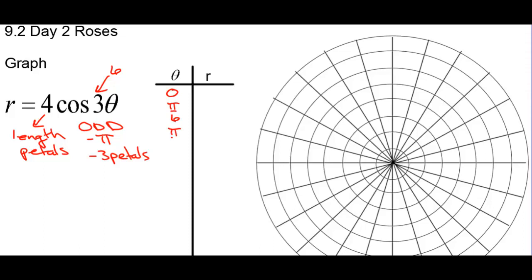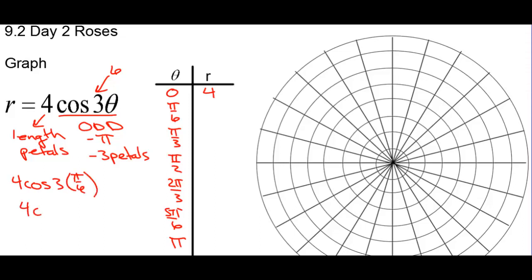We're going to double that coefficient so that we can get that same pattern. So we have 0, 1/6, 2/6, 3/6, 4/6, 5/6, and then 6/6 which is pi. We only have to go to pi to get this graph finished. Let's plug 0 in: cosine of 0 is 1, 1 times 4 is 4. If we plug pi over 6 in, we get cosine of 3 times pi over 6, that's 4 cosine of pi over 2, which is 0. Then it goes negative 4, 0, 4, 0, negative 4.